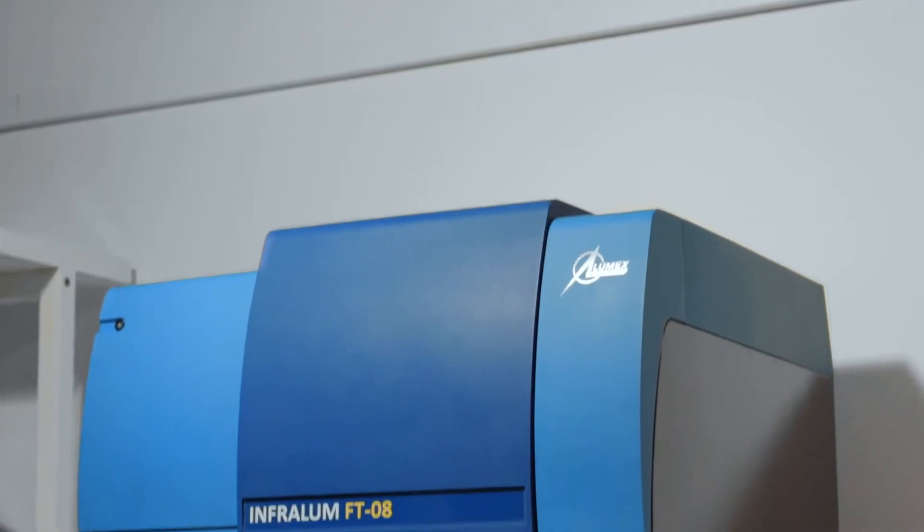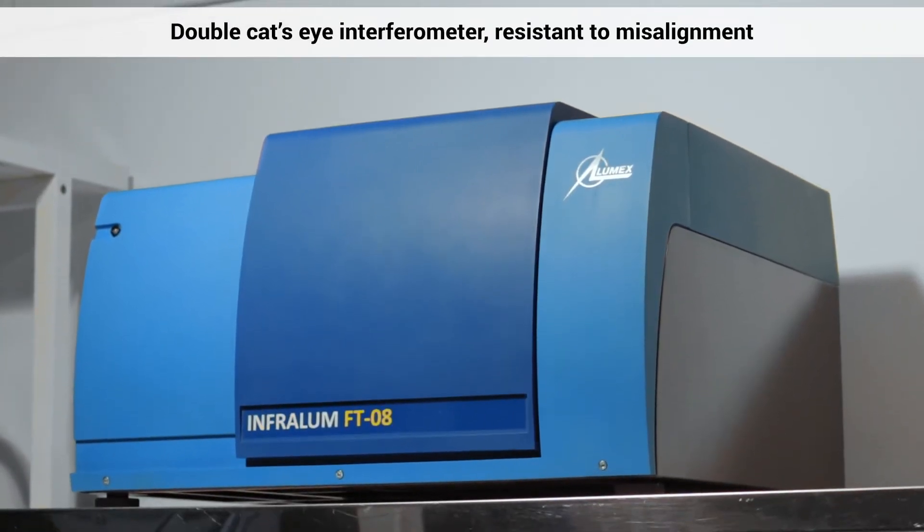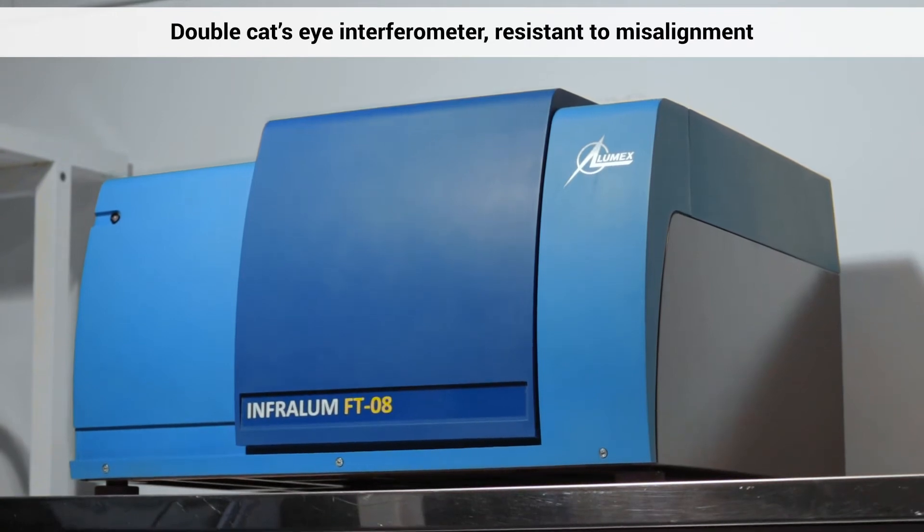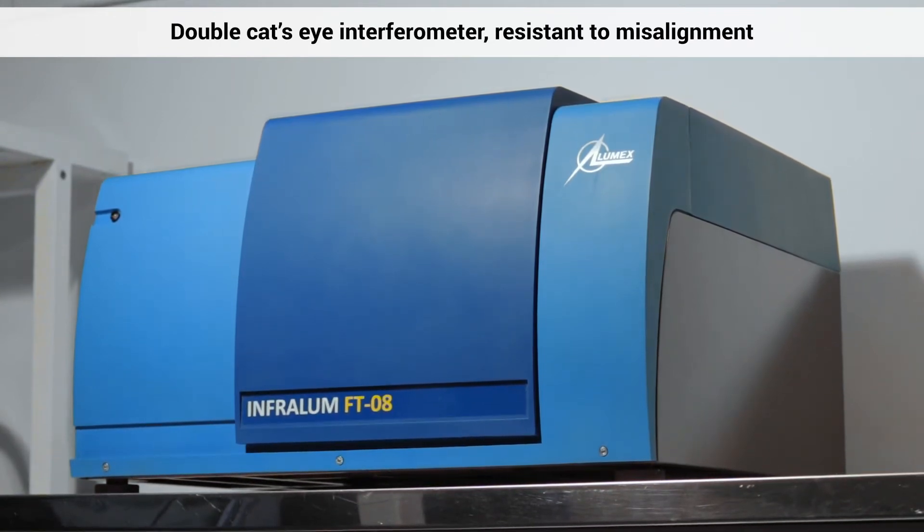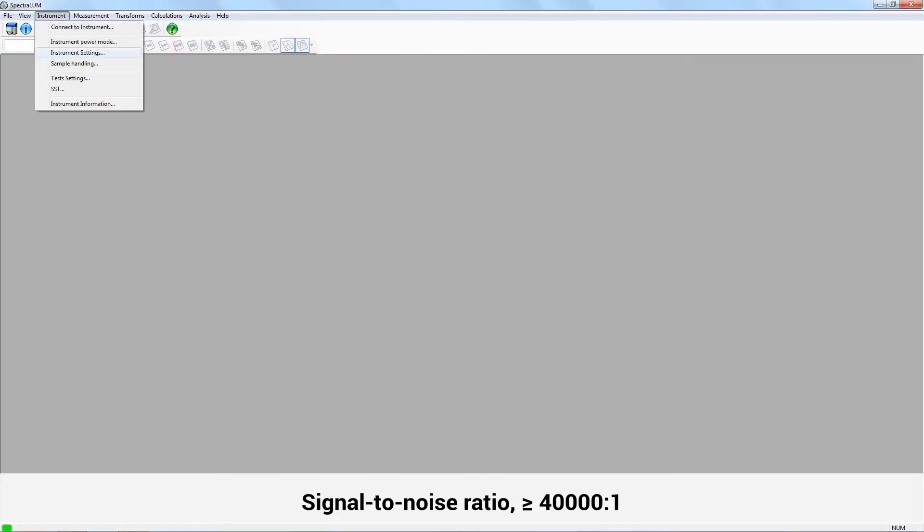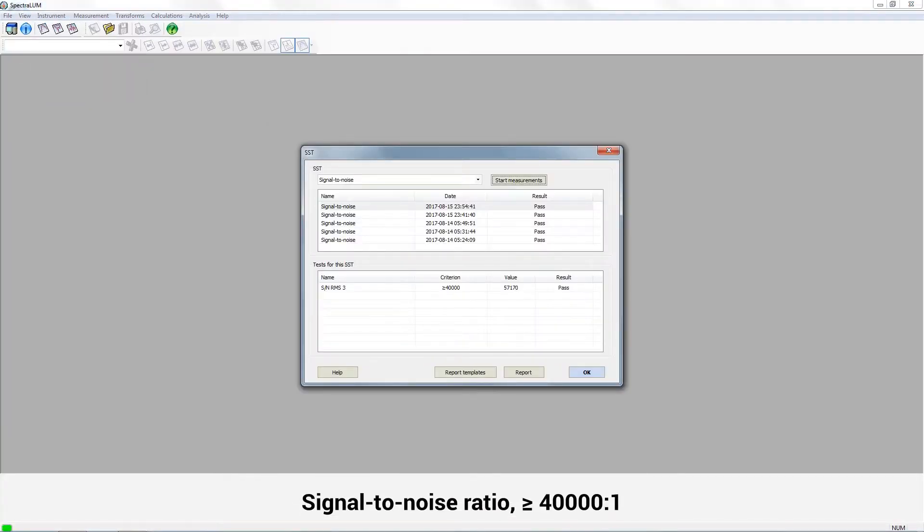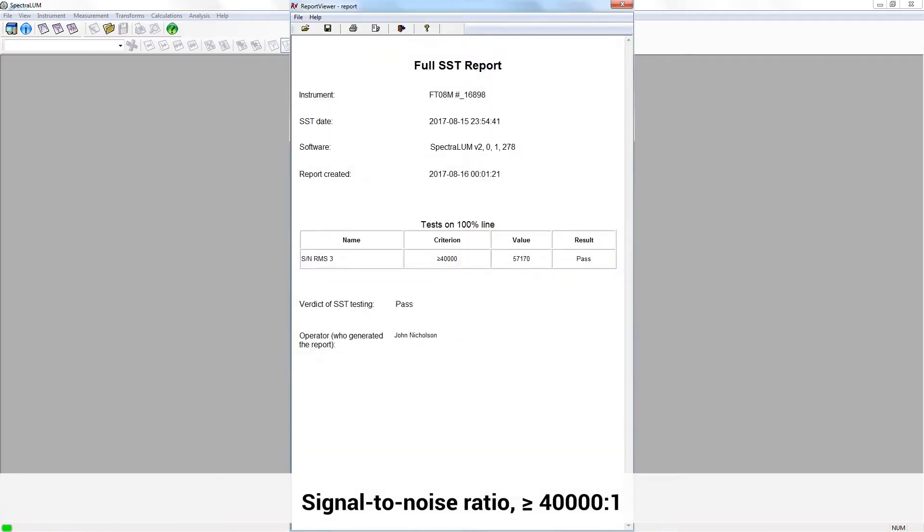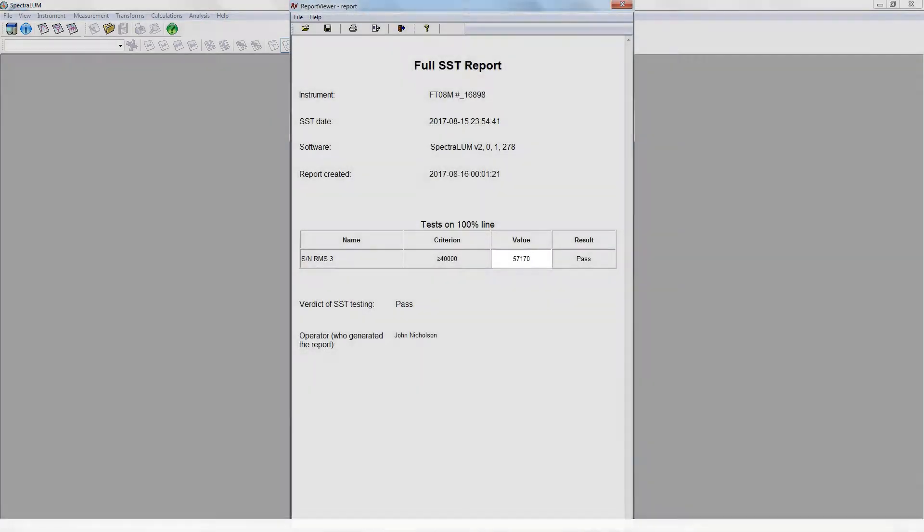It also comes with a number of technical advantages. Firstly, it has a patented interferometer, which makes the optical system misalignment-proof. Secondly, the high signal-to-noise ratio, over 40,000 to 1, allows users to obtain high-quality spectra without loss of information.